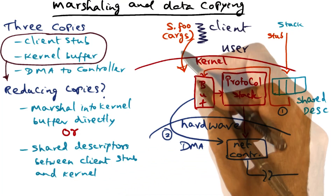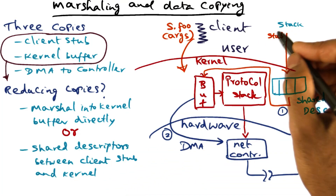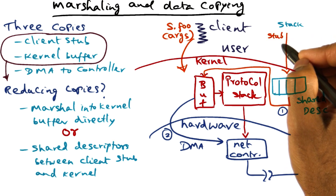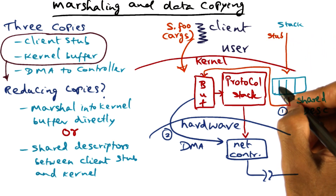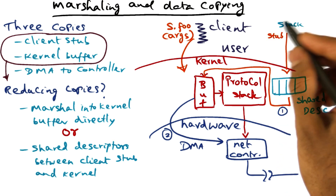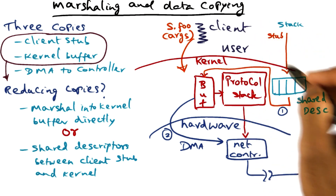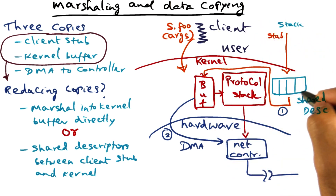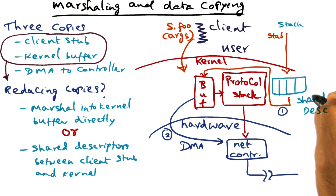An alternative to dumping code into the kernel is to leave the stub in the user space itself, but have a structured mechanism for communication between the client stub and the kernel. That structured mechanism is a shared descriptor.